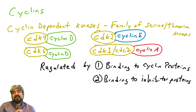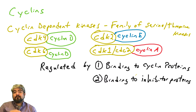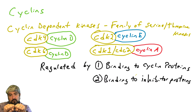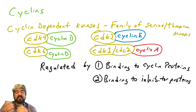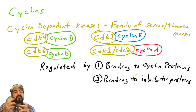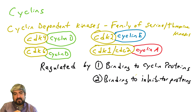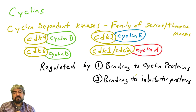Cyclin-D binds to CDK4 and helps activate it, and the same with CDK6 — when cyclin-D binds to CDK6, it activates it. These kinases depend upon the cyclin component to become active. CDK2 is only active when bound to cyclin-E, and cyclin-A needs to bind to CDK1 for CDK1 to be active. They were called cyclins because when discovered, it was found that these proteins cycled through the cell cycle — their levels went up and then down, repeatedly — and those cycles coincide with phases of the cell cycle.